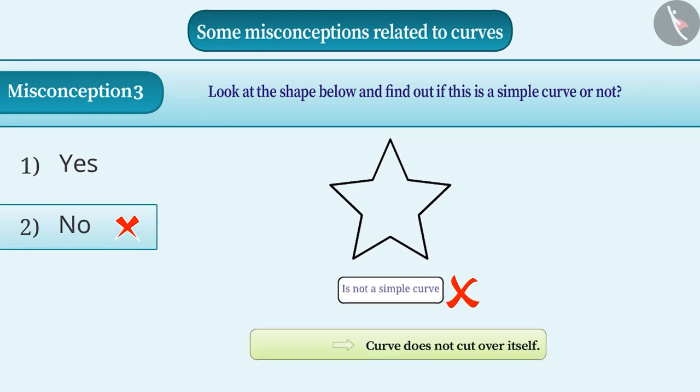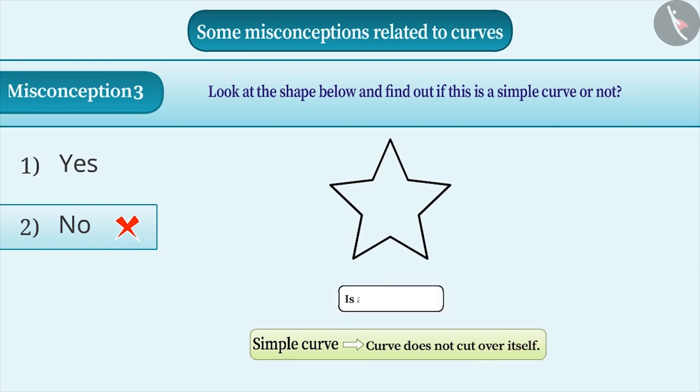When a curve does not cut itself, it is known as simple curve. If we look at this curve, then at any point, it does not cut itself. Therefore, it is a simple curve.